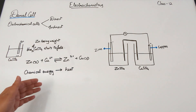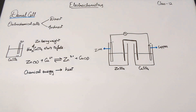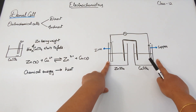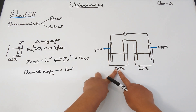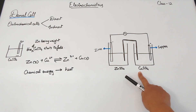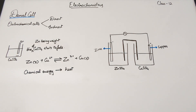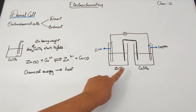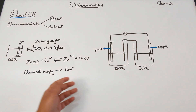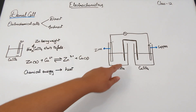Moving on to the Daniell cell — it is an example of a galvanic cell. This cell has two electrodes: zinc and copper. The electrolytes are zinc sulfate and copper sulfate. These are both connected to each other by a salt bridge. The salt bridge consists of a solution of an electrolyte such as KCl or KNO₃. Importantly, the salt bridge does not undergo a chemical change; however, it helps in completing the circuit.